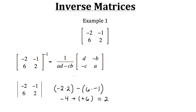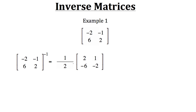Now that we know the determinant is 2, we can plug it back into our equation. We need to build the new matrix: our a and d values — negative 2 and positive 2 — switch spots, so positive 2 goes to the top left and negative 2 goes to the bottom right. For b and c, we take the opposite of each: negative 1 becomes positive 1, and positive 6 becomes negative 6.